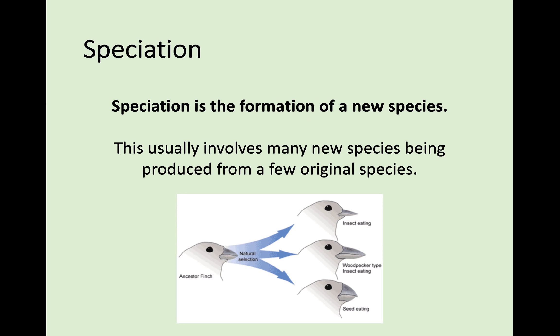Finally, we're going to look at speciation — the main part of evolution. Speciation is the formation of a new species, usually involving multiple species being produced from an original species. For example, there was an ancestral finch, and through the process of natural selection and speciation, we ended up with several different species of finch — and we're going to look at how that actually happens.